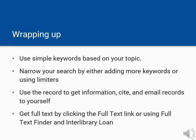Let's summarize what we've learned about Single Search. Use simple keywords at the beginning when you start searching. Narrow your search to relevant articles by adding in more keywords or using limiters like the date slider or the peer-reviewed checkbox. The record is helpful for information and for tools to help you cite, save, and email articles to yourself. Get the full text of an article by clicking the Full Text link, or by using Full Text Finder to locate it elsewhere or request it through Interlibrary Loan. And if you have any questions, please contact us here at the library.